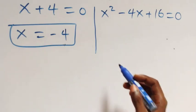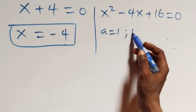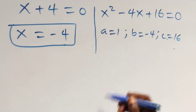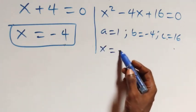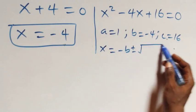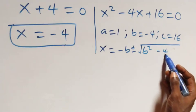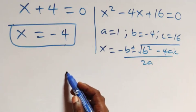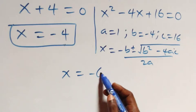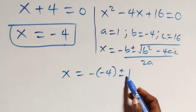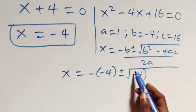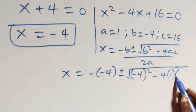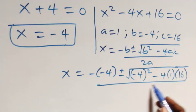On this side we have a quadratic equation where a equals 1, b equals minus 4, and c equals 16. Applying the quadratic formula: x equals minus b plus or minus square root of b squared minus 4ac, over 2a. This gives x equals 4 plus or minus square root of (minus 4) squared minus 4 times 1 times 16, over 2 times 1.